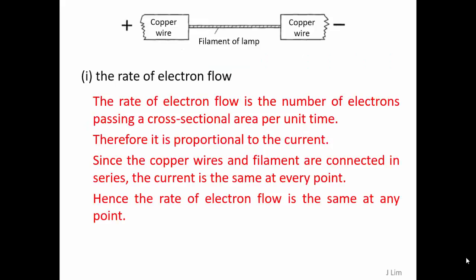The rate of electron flow is the number of electrons passing a cross-sectional area per unit time. Therefore, it is proportional to current.